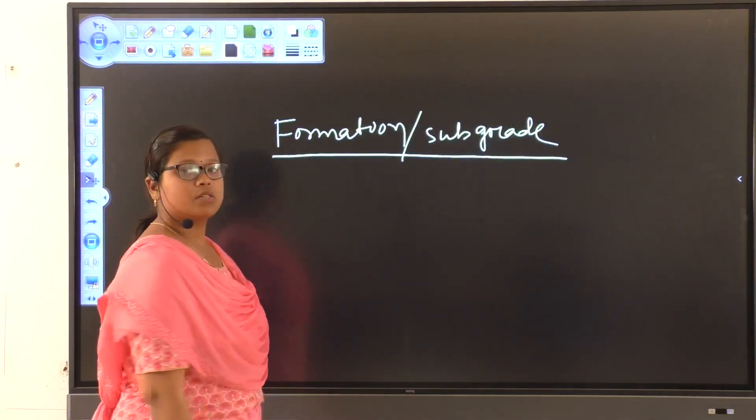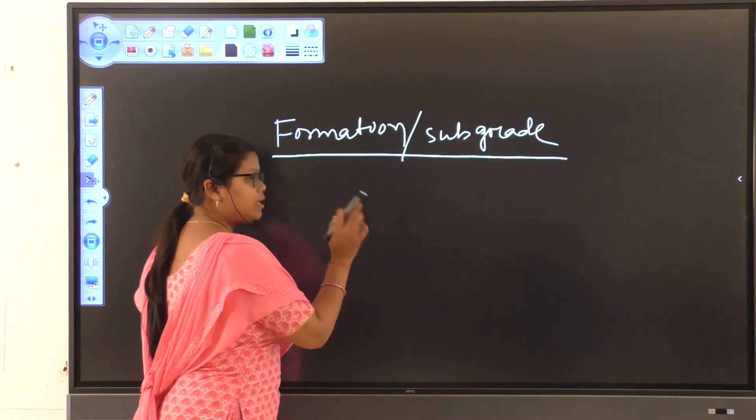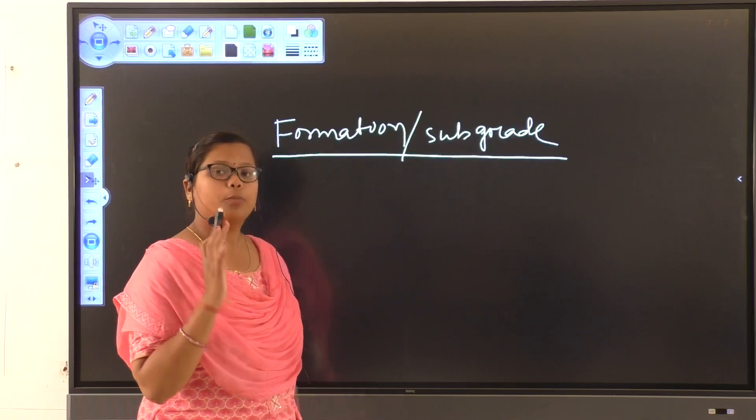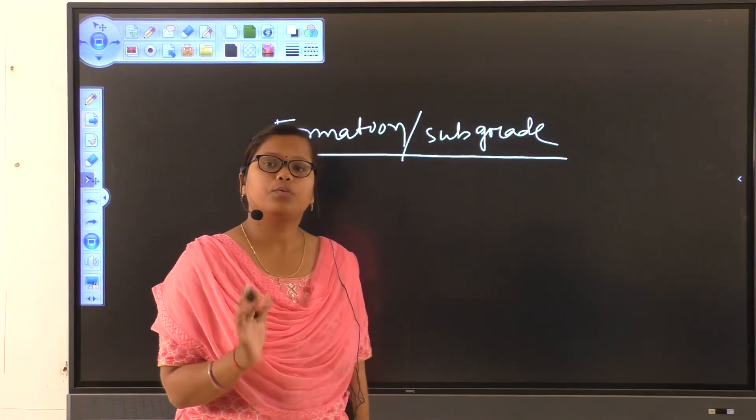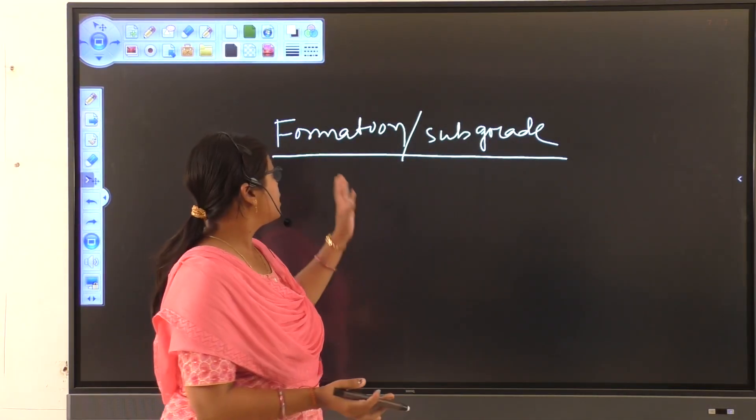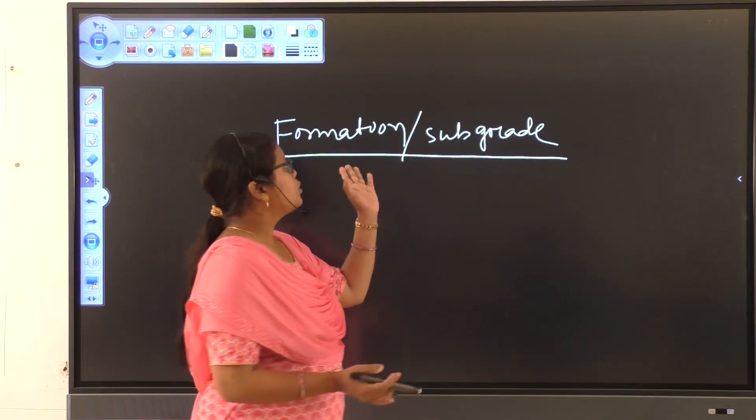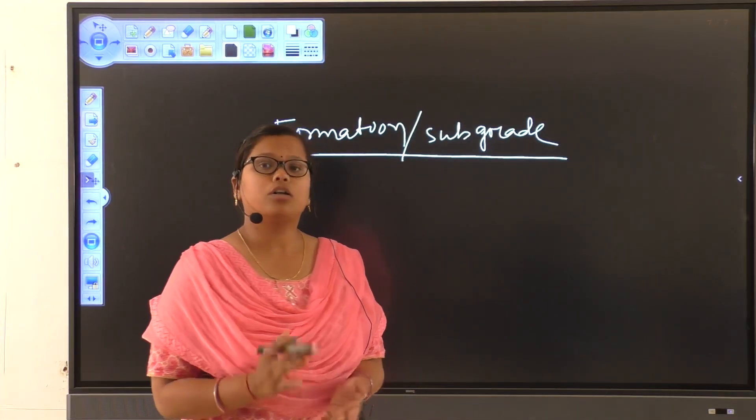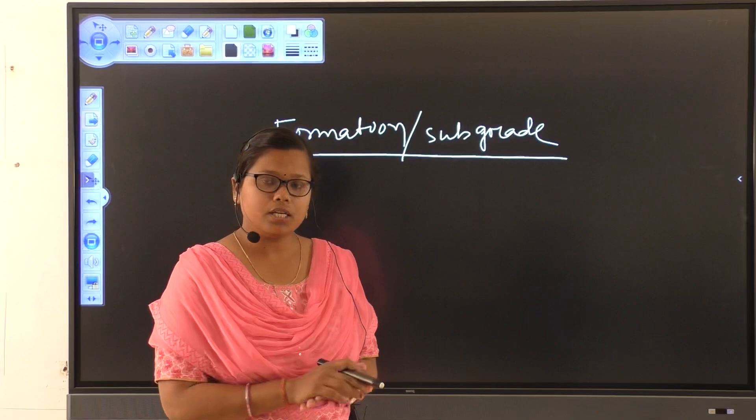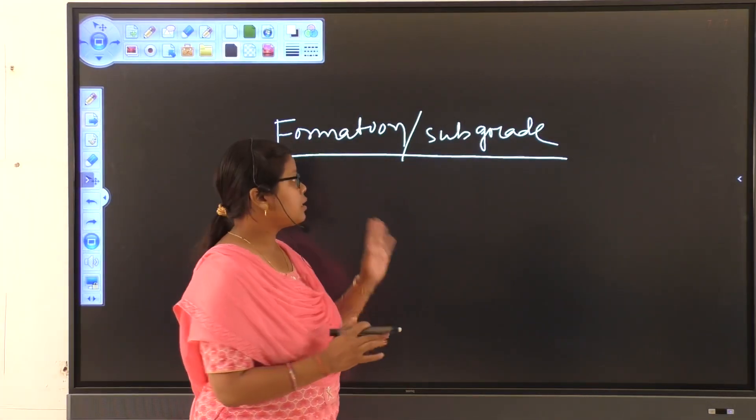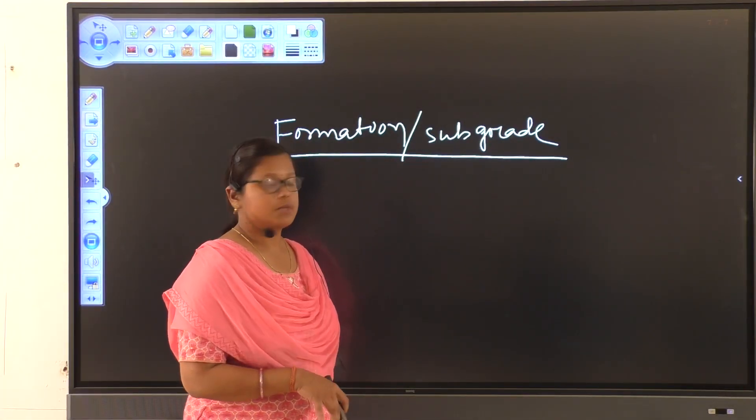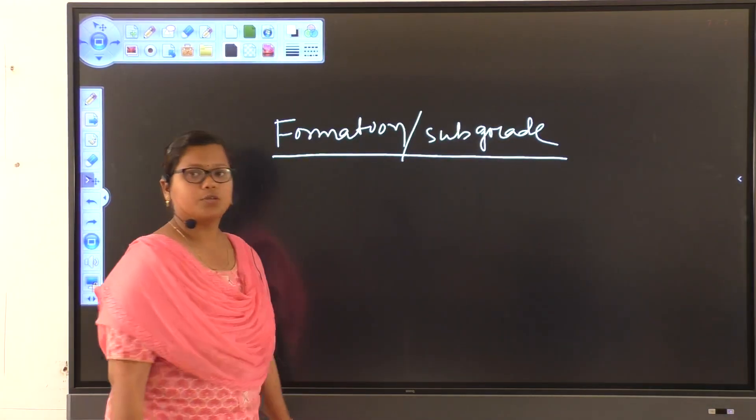So, what is the formation? Formation is the prepared and finished surface over which the permanent way is placed. So, formation is designed on the basis either in cutting or in bank according to the natural ground surface. Thank you.